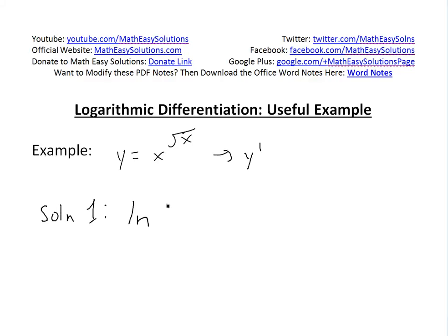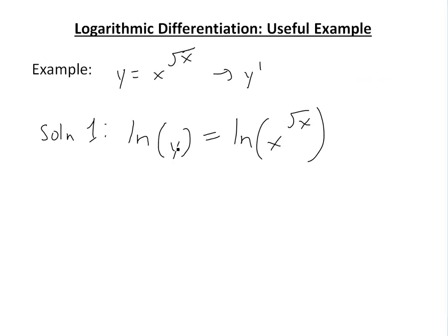So we have ln y on the left side, and on the right side ln of x to the power of square root of x. Using log rules, the exponent comes down, so this is the same thing as square root of x times ln of x, and the left side remains ln y.